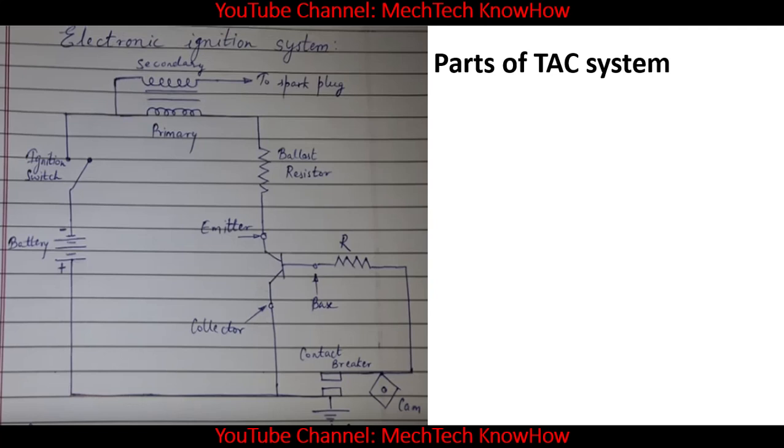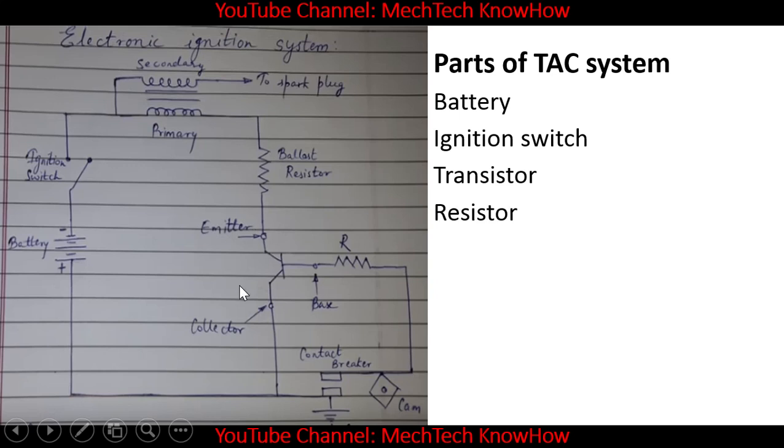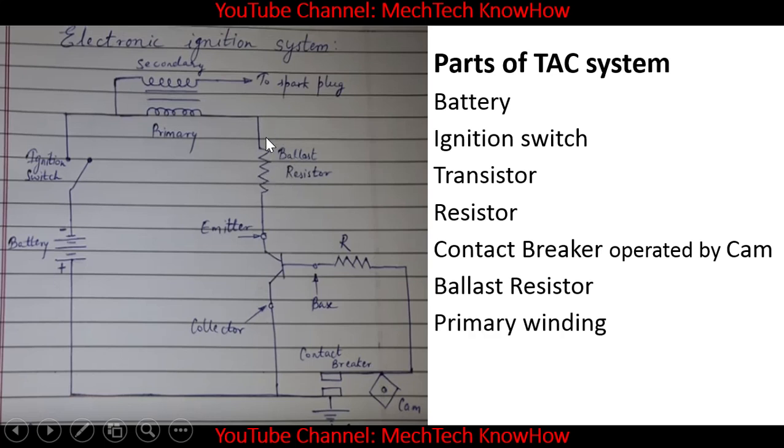So the parts of TAC system are: battery, as you can see over here; ignition switch; transistor, as you can see over here, emitter, collector and base; resistor; then contact breaker which is operated by cam; ballast resistor; primary winding; secondary winding; and spark plug.